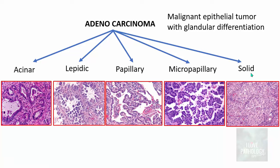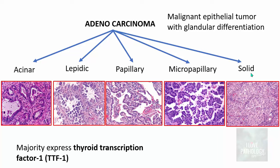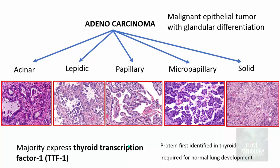These are the five variants of adenocarcinoma of the lung. To determine whether an adenocarcinoma is primary lung or metastatic from elsewhere, immunohistochemistry is performed — particularly for Thyroid Transcription Factor 1 (TTF1). Most adenocarcinomas of the lung express TTF1. This protein was first identified in the thyroid but is required for normal lung development, and so it is expressed in lung adenocarcinomas.